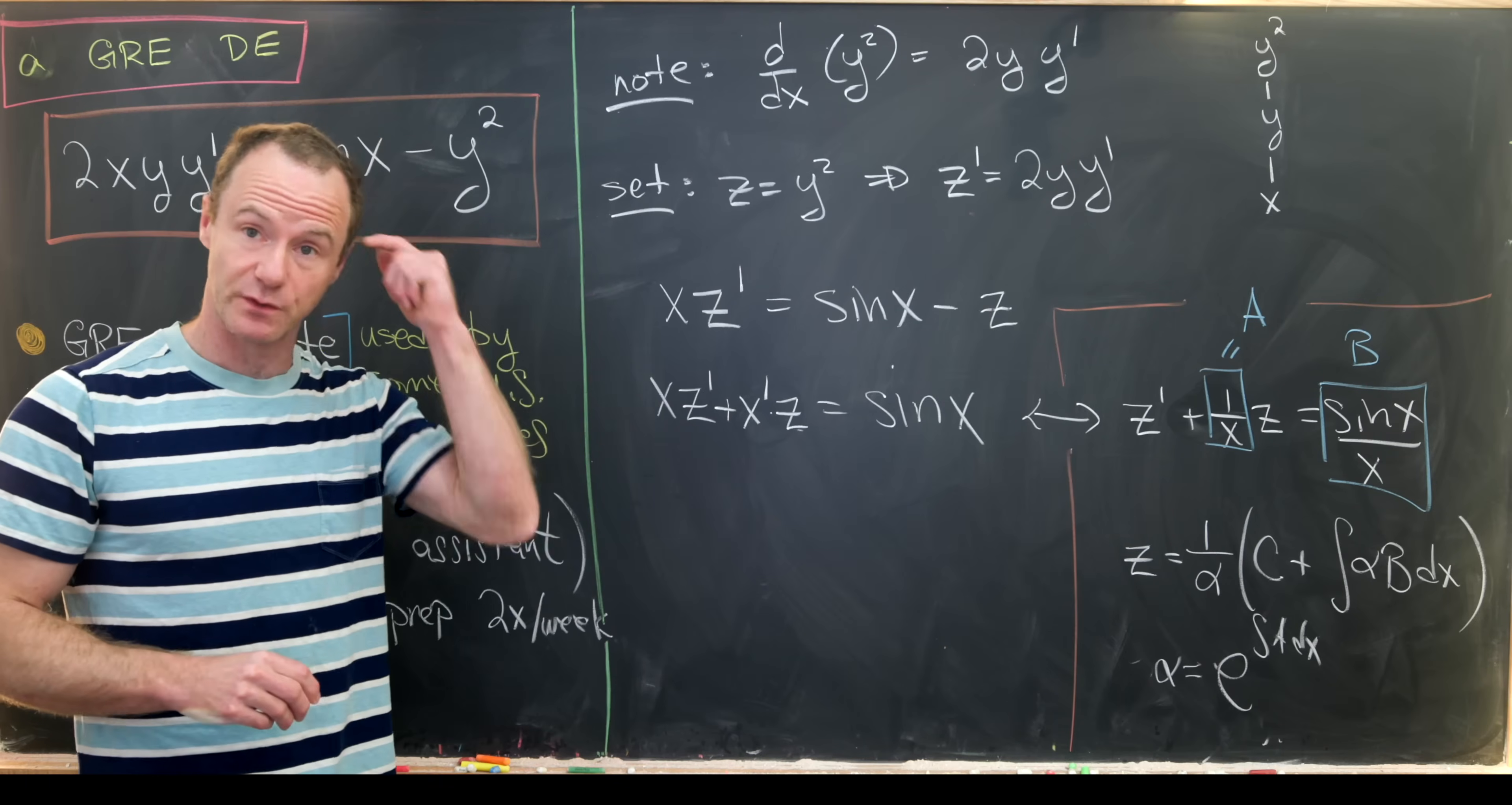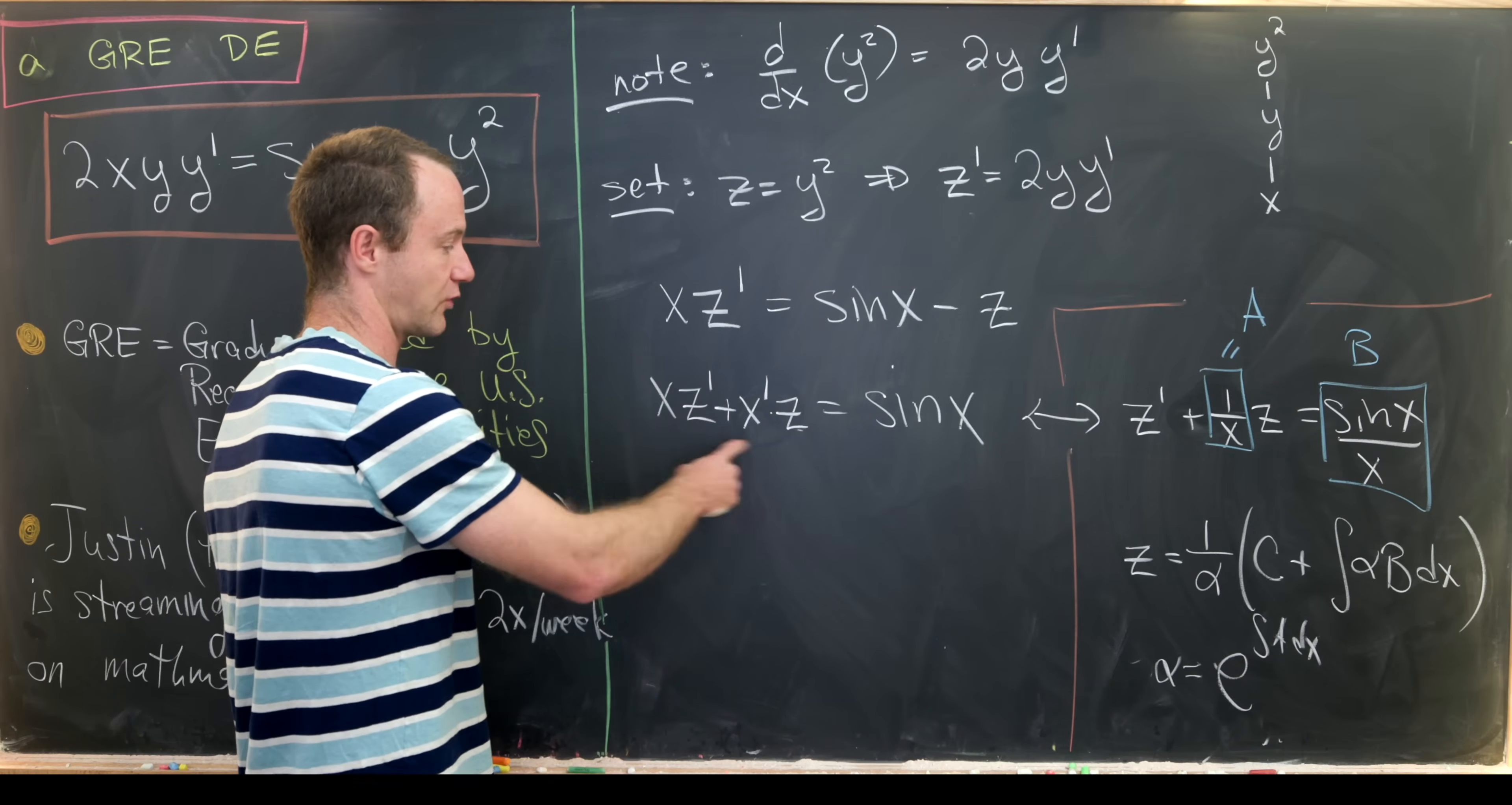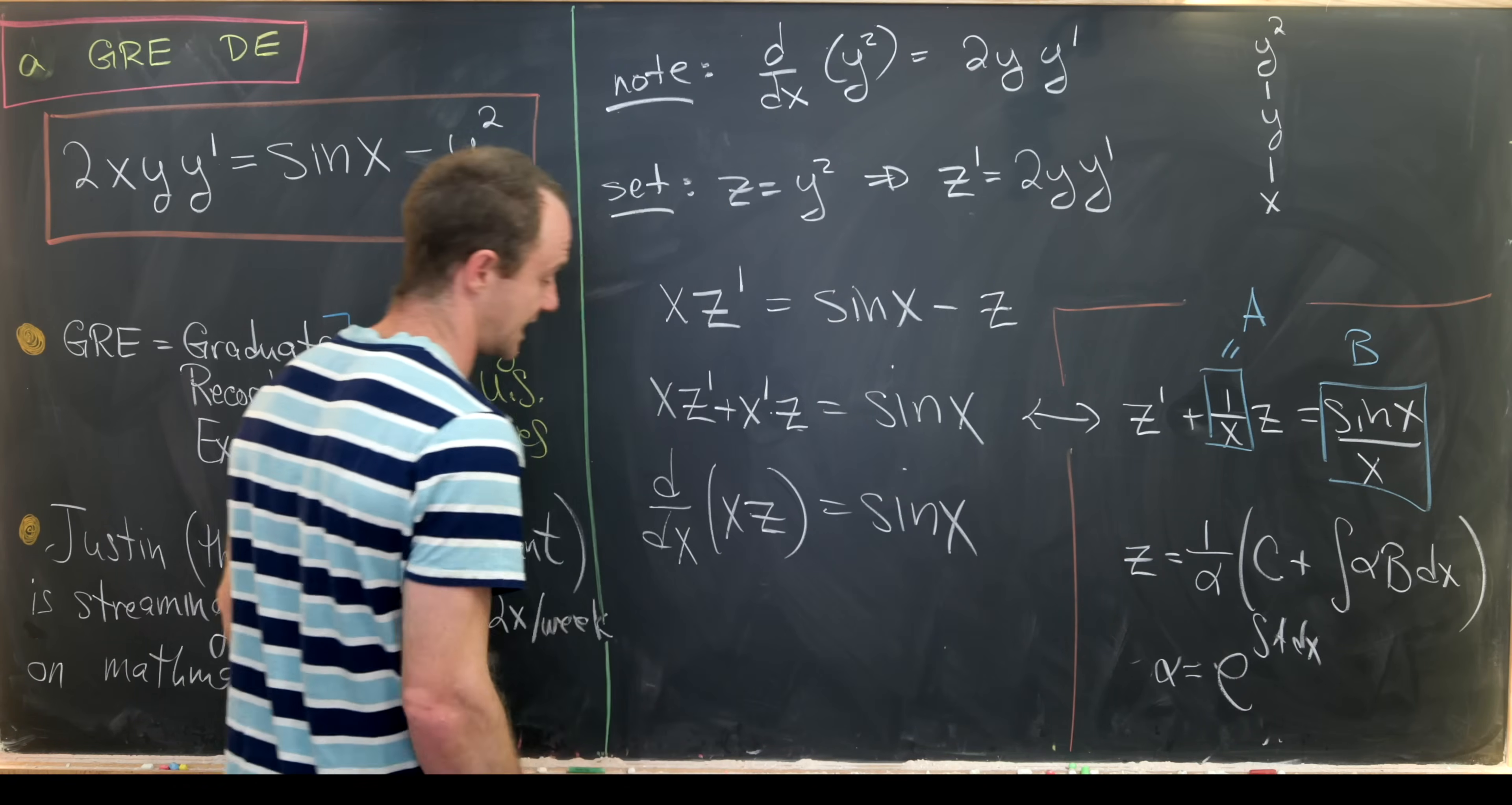Because the derivative of x with respect to itself is really just 1, and so that is exactly the same as what we had before. And now this looks like the product rule. In fact, it looks like the derivative with respect to x of x times z. And then we have that's equal to sine x.